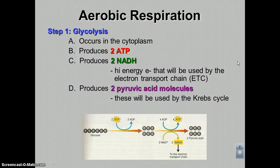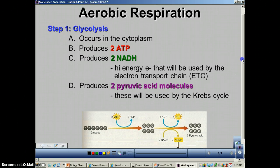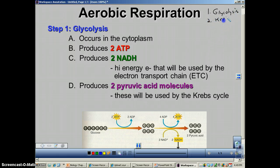Welcome to episode 2 of chapter 9. In this episode, we're going to cover the details of aerobic respiration. Aerobic respiration has three different steps: step 1, glycolysis; step 2, the Krebs cycle; and step 3, the electron transport chain.